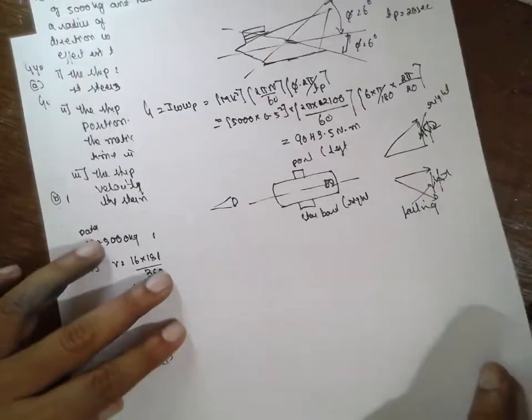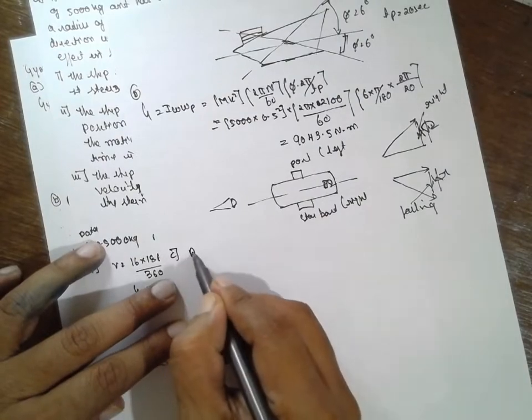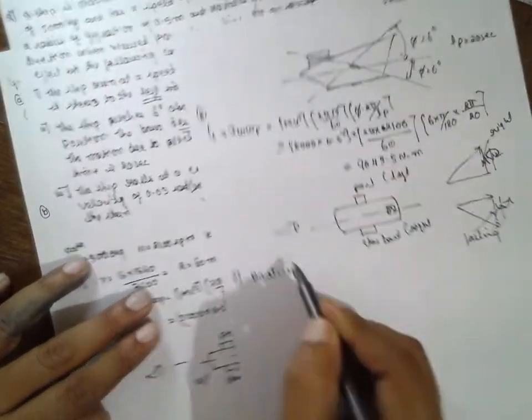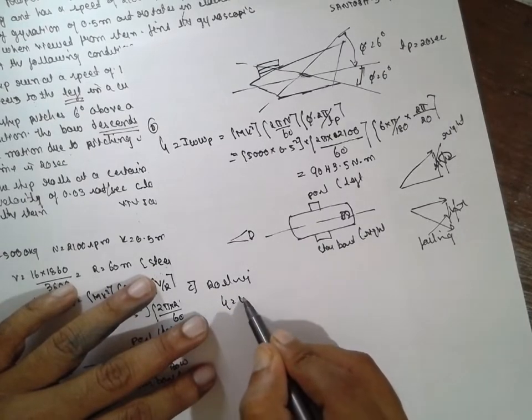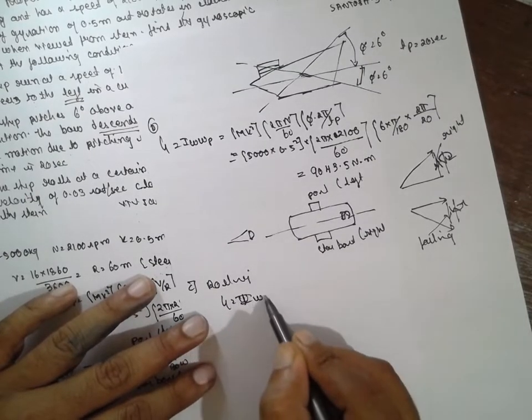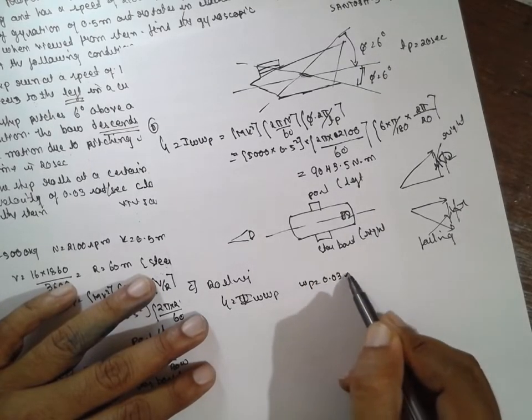Next is about rolling. Third is, last one is rolling. This is the formula for rolling.